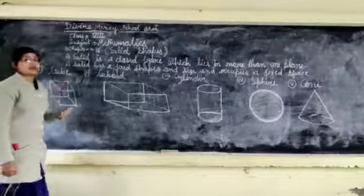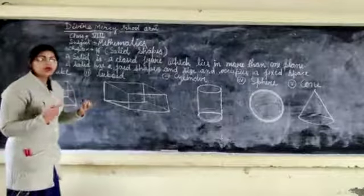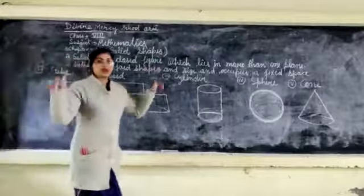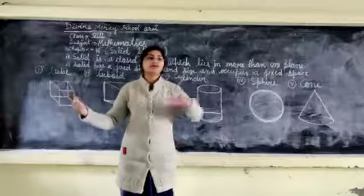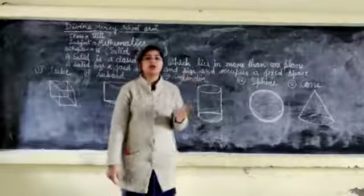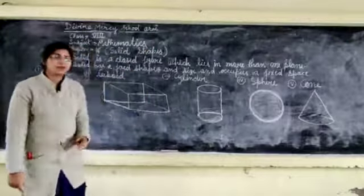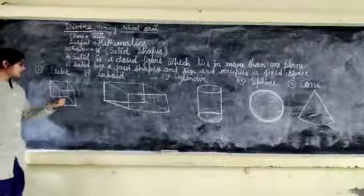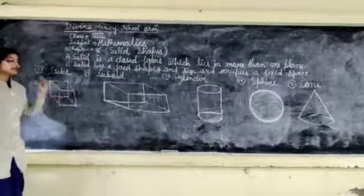First of all, I am going to tell you what faces are. Faces are like the sides of a room — that is called a cube. A face means one flat plane is a face. Counting the faces of a cube: first, second, third, fourth, fifth, and sixth. So there are six faces on a cube.